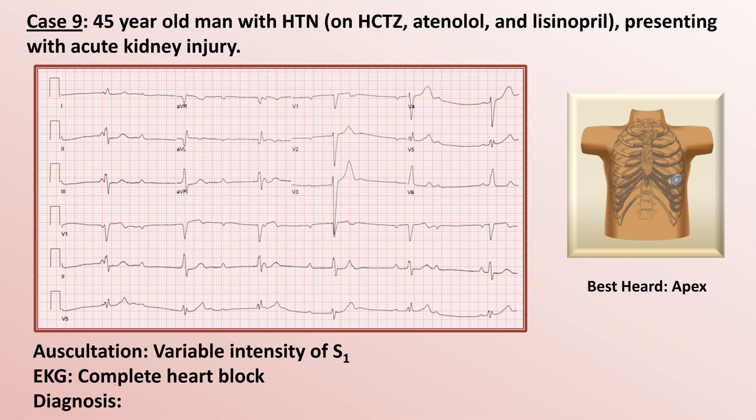What's the diagnosis — that is, why does this patient have complete heart block? There are many potential explanations, but based on the history, beta blocker toxicity is most likely. Atenolol is renally cleared and can build up to dangerous levels in the setting of renal failure.